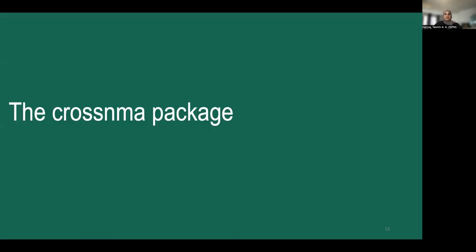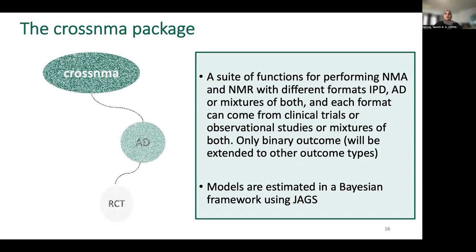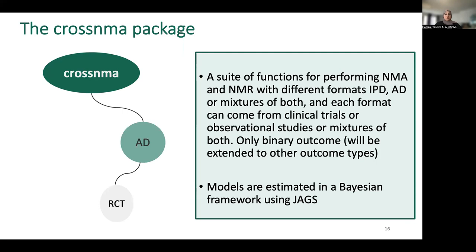These models are implemented in the CROSS NMA package, which is a suite of tools for performing network meta-analysis and meta-regression with individual participant data, aggregate data or mixes of both, and each format can come from clinical trials or observational studies or mix of both. Behind the scenes, models are estimated in a Bayesian framework using JAGS and R. The package allows for conducting standard network meta-analysis when we have aggregate data from RCTs, allows the inclusion of IPD of these RCTs, and also enables each format to include observational studies.